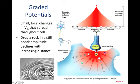The analog we like to use is to drop a rock in a pond. The size of the wave would be very high where the rock first entered the water, and the size of the ripple would then decrease more and more the farther you got away from where the rock went into the water.